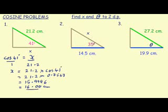A second problem, we're given the angle and we're given the adjacent side, 14.5, and we're required to work out the hypotenuse, x.